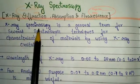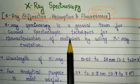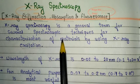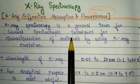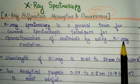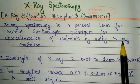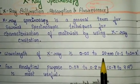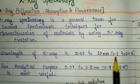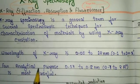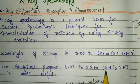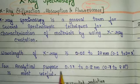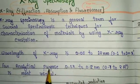X-ray spectroscopy is a kind of technique similar to other spectroscopic techniques like IR, visible, and Raman. In this technique we use X-ray as a radiation source, since X-ray is also electromagnetic radiation. The wavelength of X-ray is 0.01 to 10 nanometers, or 0.1 to 200 angstroms, and for analytical purposes 0.07 to 0.2 nanometers, or 0.7 to 2 angstroms, is most useful.